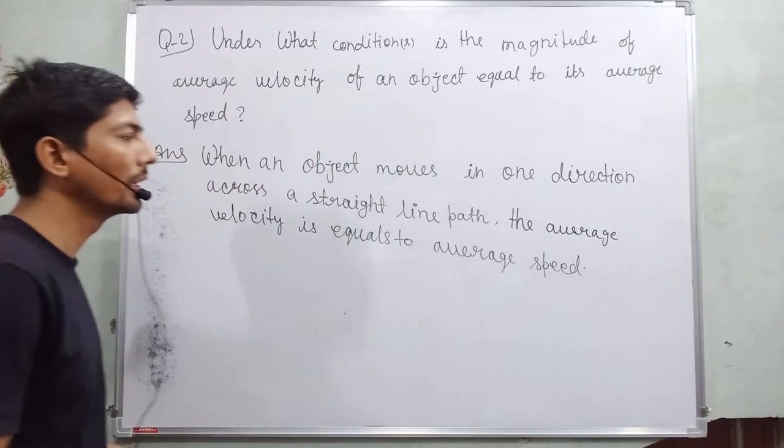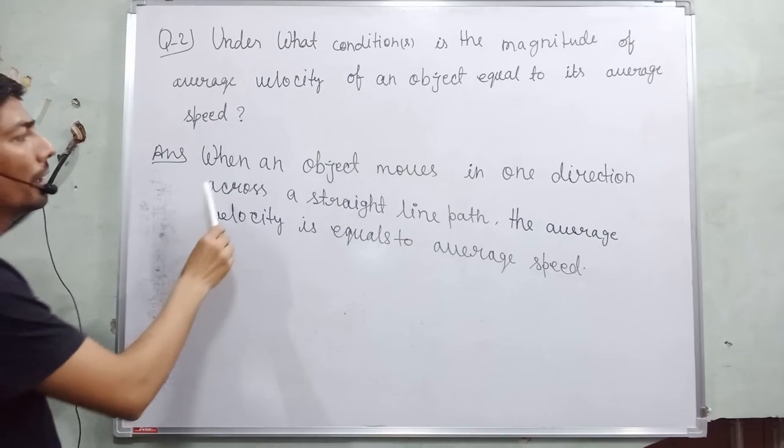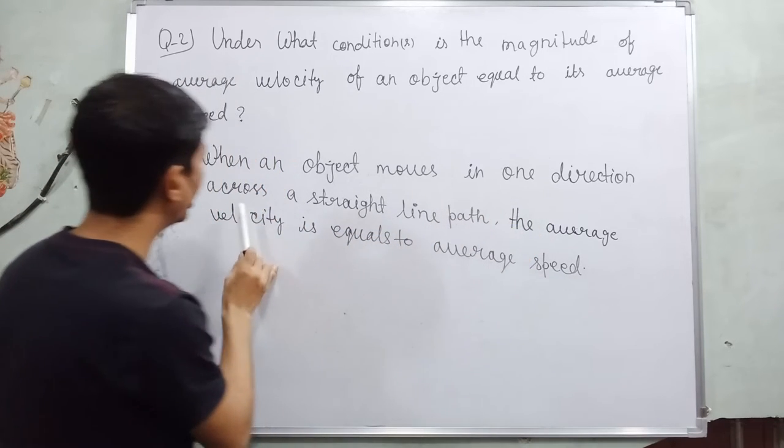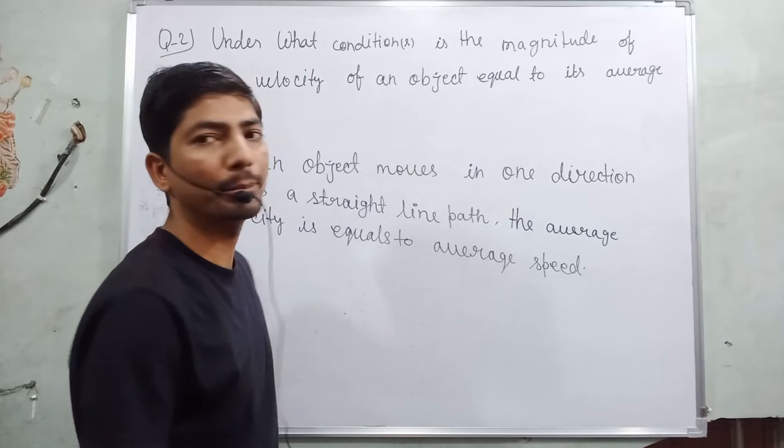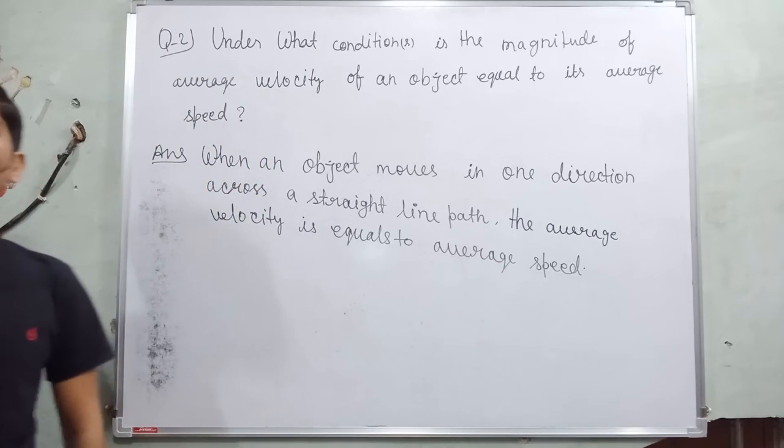Okay? So, this will be the answer to this question. When an object moves in one direction across a straight line path, the average velocity is equal to average speed. This will be the answer to this question.